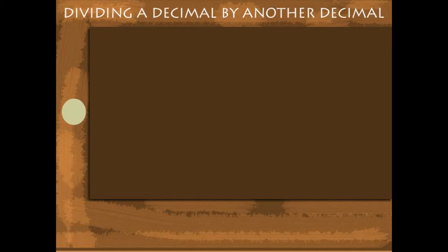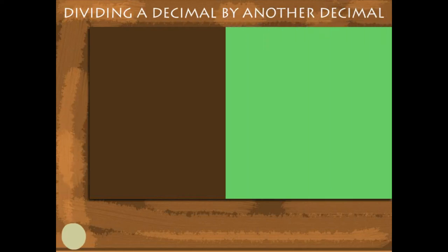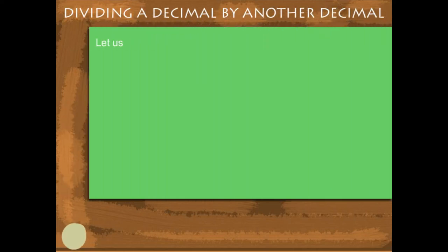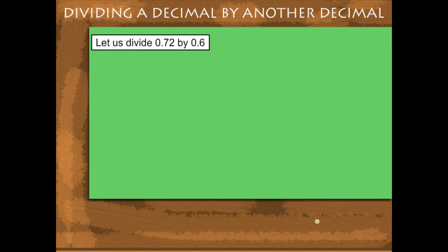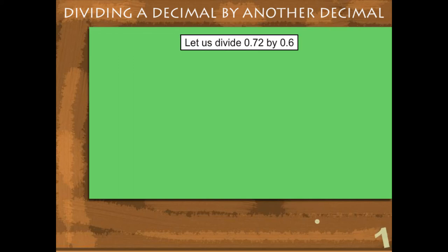Dividing a decimal by another decimal. To divide a decimal by another, let's divide 0.72 by 0.6. This can be written as 0.72 divided by 0.60.